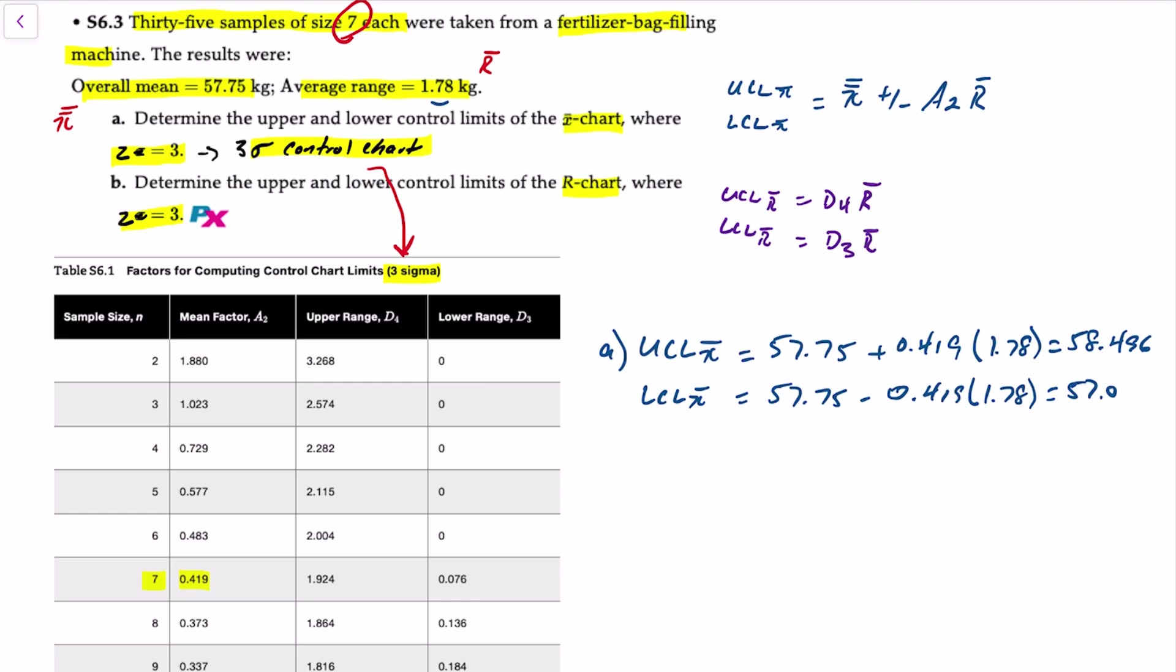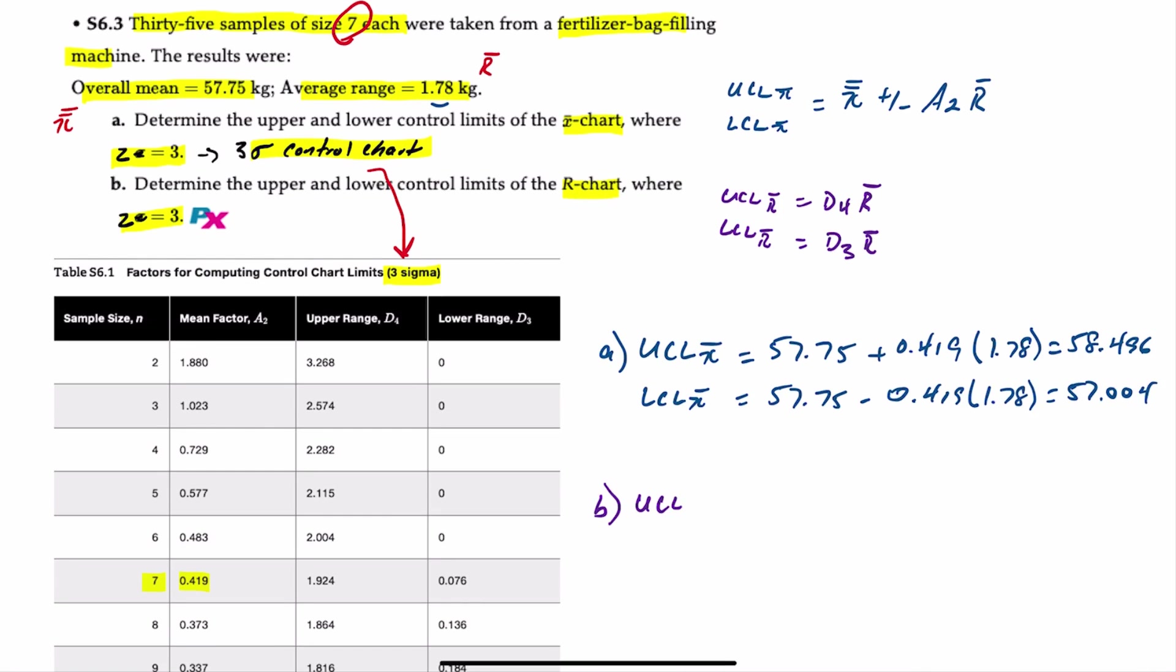For requirement B, the upper control limit for our R chart is equal to D4, which is 1.924, times the average range of 1.78. That gives us an upper control limit of 3.4272. The lower control limit for the R chart is 0.076 times 1.78, which gives us a lower limit of 0.135 kilograms.